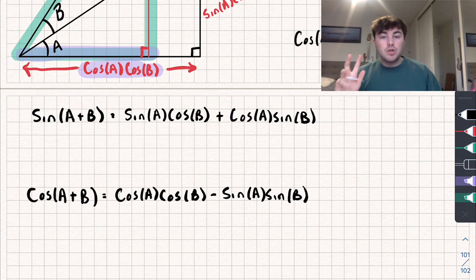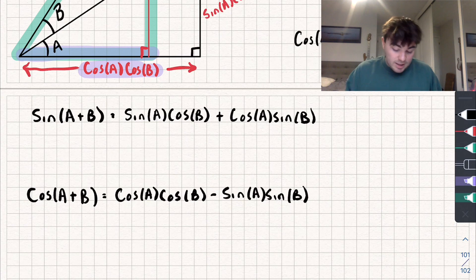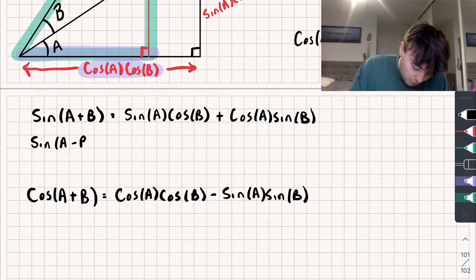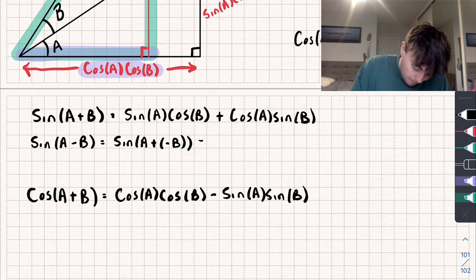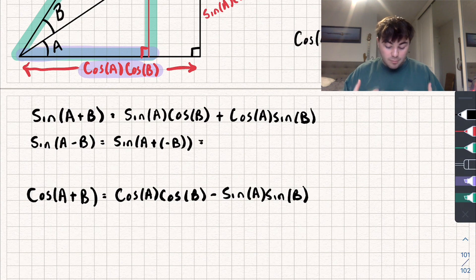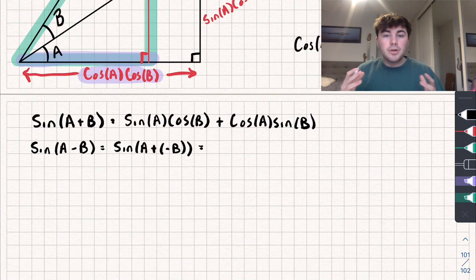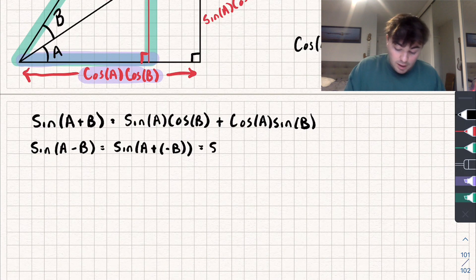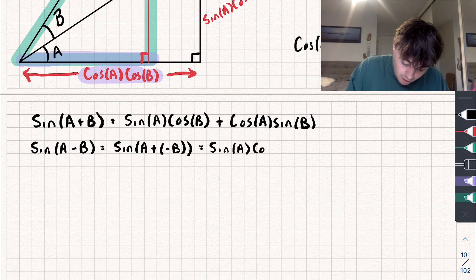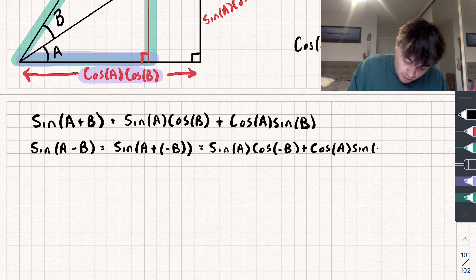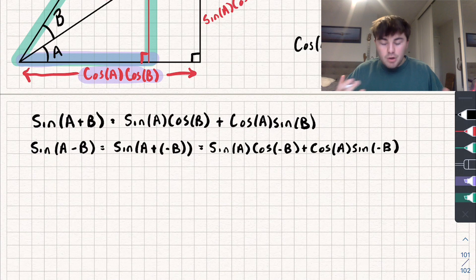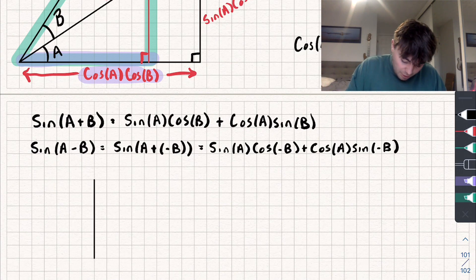So now how can we find more? We want to find sine of A subtract B. Well, that's equal to sine of A plus negative B, and so all I'm going to do is substitute negative B wherever there's a B. So we've got sine of A multiplied by cosine of negative B plus cosine of A multiplied by sine of negative B.